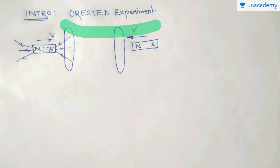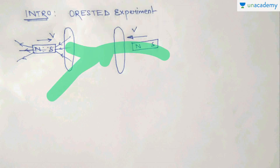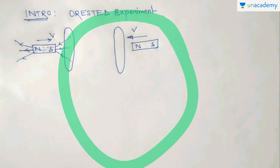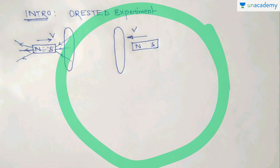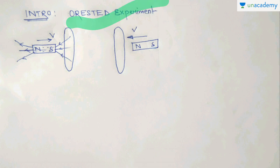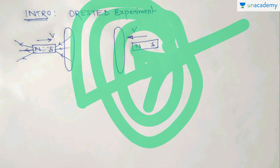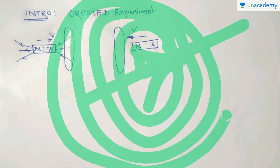What was the Oersted Experiment? The Oersted Experiment showed that whenever an electric current is passed through a wire, there will be a magnetic field surrounding the wire. So the key idea was that when an electric current is passed through a wire, there will be a magnetic field around it.